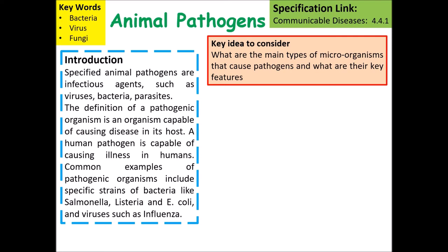A pathogen is any sort of microorganism that can cause disease. Specific animal pathogens are infectious agents such as viruses, bacteria and parasites. There are also some fungal diseases.